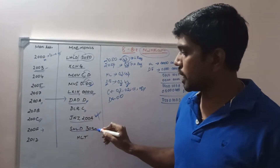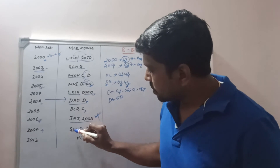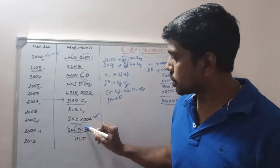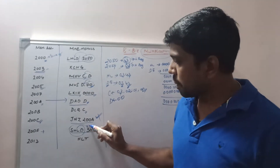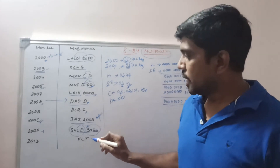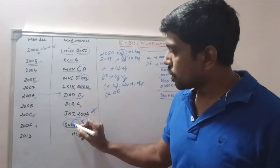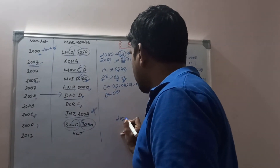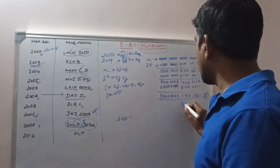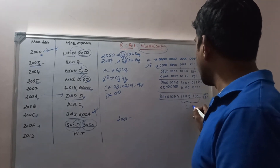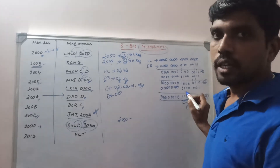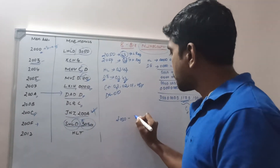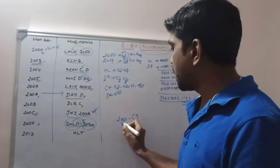At location 200FH, you write the instruction SHLD 3050H. This instruction stores the content of the HL register to the specified memory location 3050H, which represents the output. Whatever value is present in the HL register is transferred to memory location 3050H. The lower byte C9H is stored at 3050H and the upper byte 00H is stored at the next successive memory location 3051H.